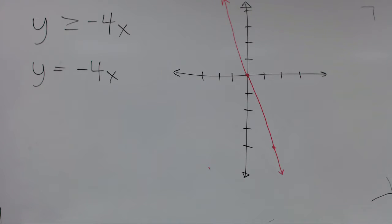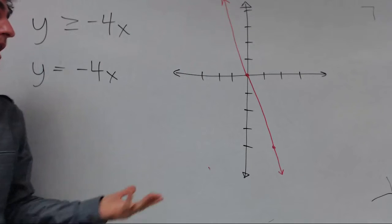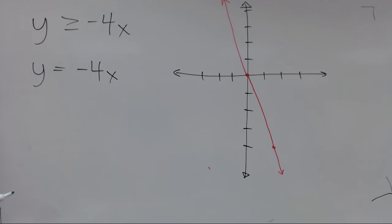Again, if that's tough, you can just use the test point. It will always tell you which side to shade. Now we can't use zero zero as the test point because it's on the line. You have to pick a point not on the line. So you can pick one, zero.